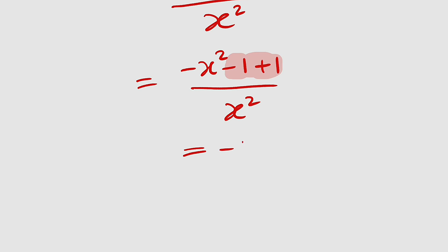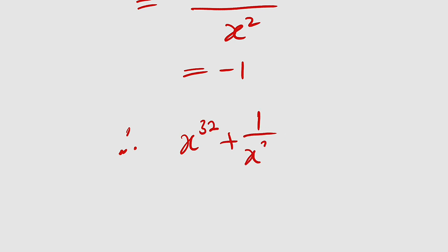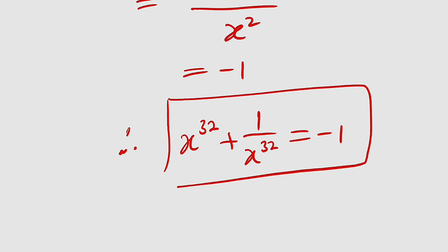This is negative 1. And hence, we conclude that x to the power of 32 plus 1 divided by x to the power of 32 is equal to negative 1. And this is our solution. Thank you for watching.